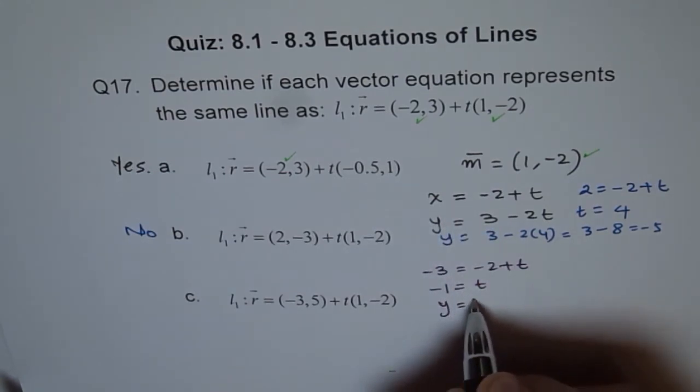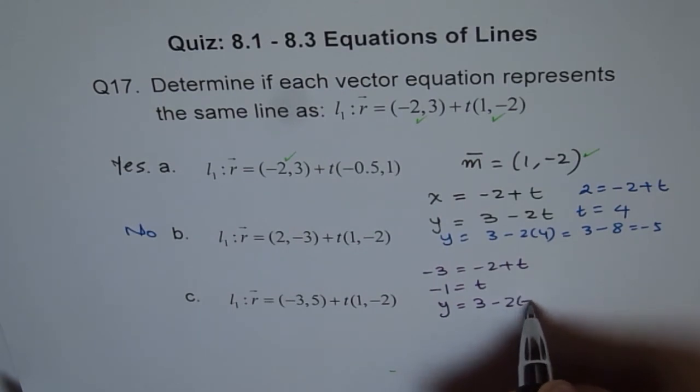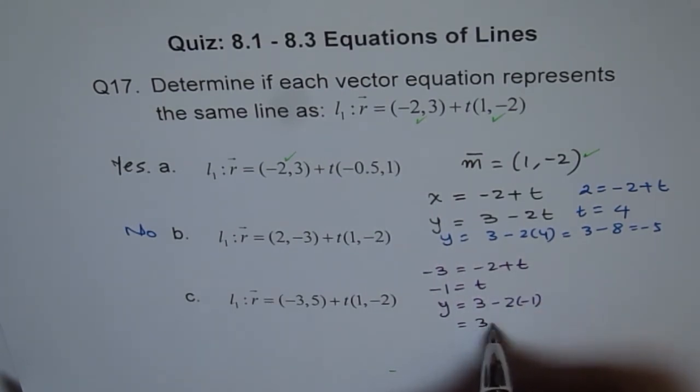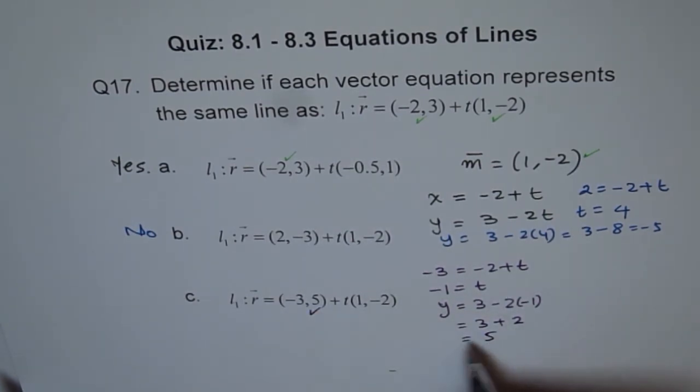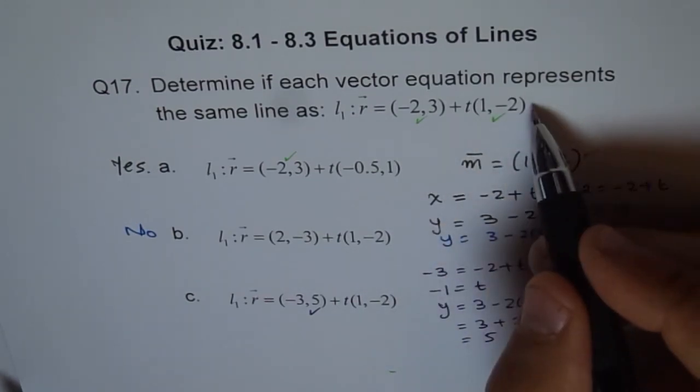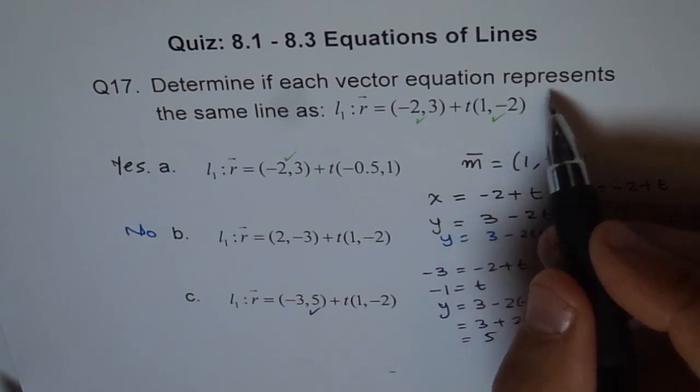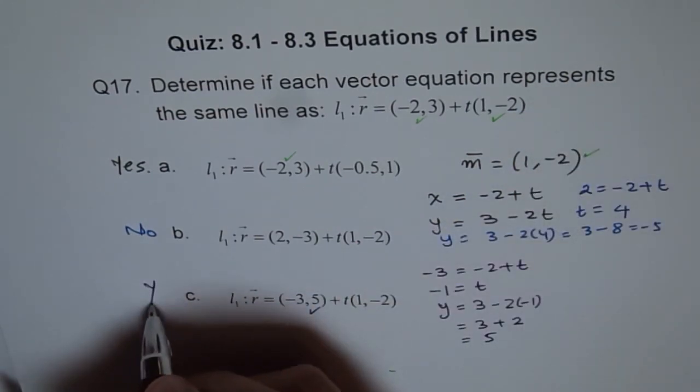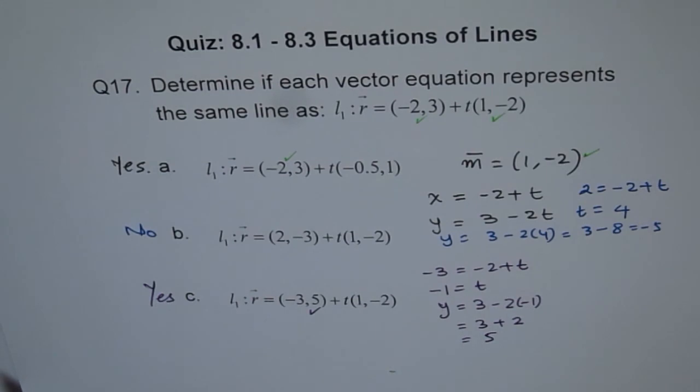If I put t as minus 1 for my second equation, then I get y equals 3 minus 2(-1), which is 3 plus 2, which is 5. Good, it matches. So that means the point (-3, 5) lies on the given line. Therefore, these are coincidental lines. That is how we should do these kinds of problems. I hope you understand. Thank you. I move on to the next question.